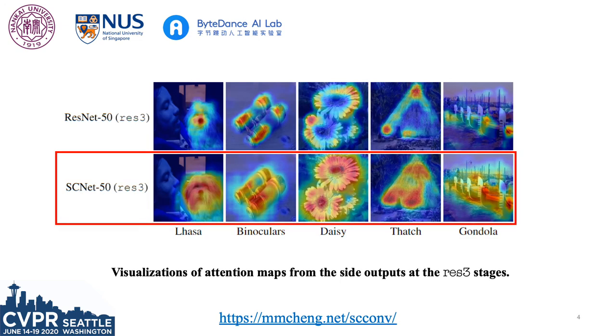A similar phenomenon can also be found by comparing the attention maps from the score layers of the side outputs, where richer context information is captured.